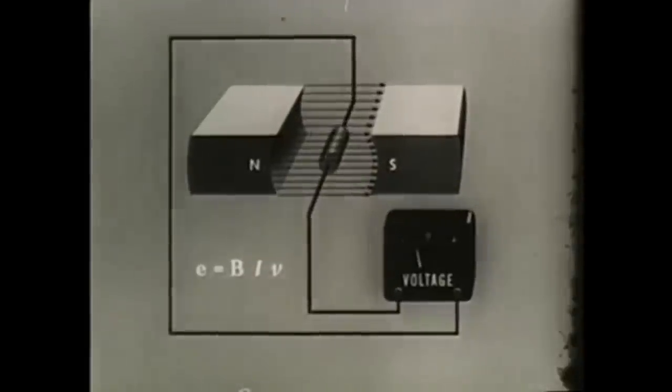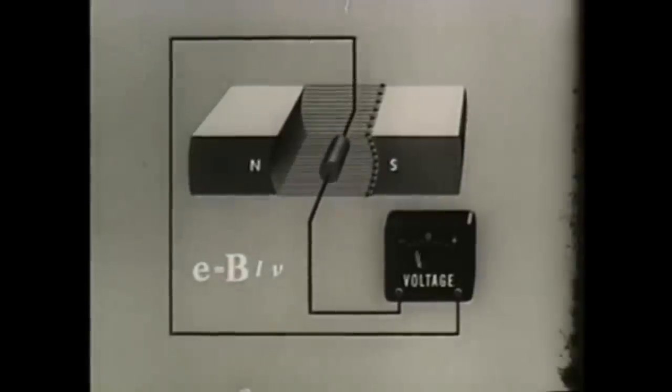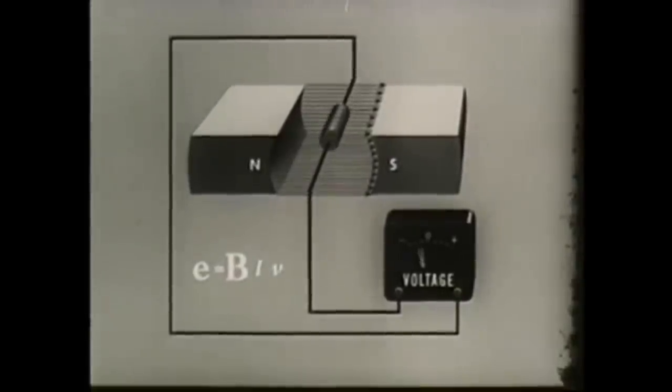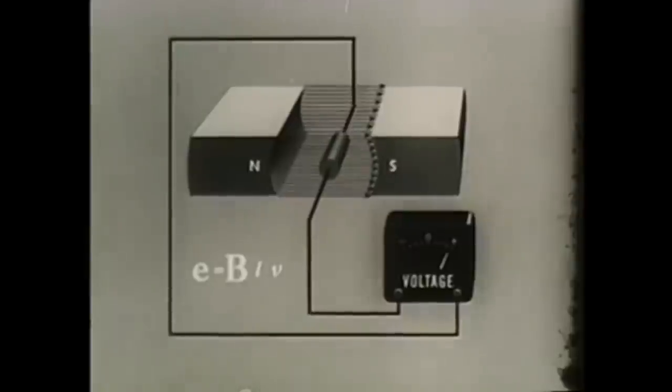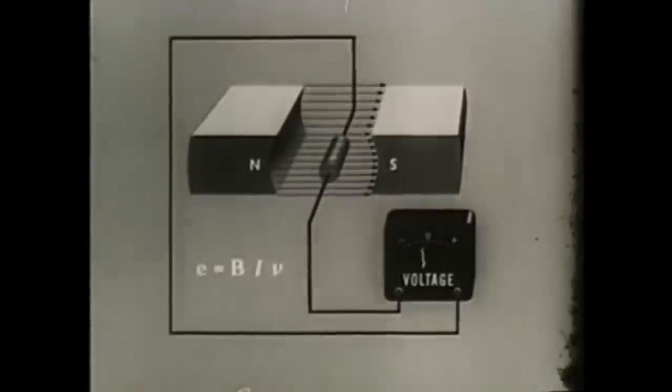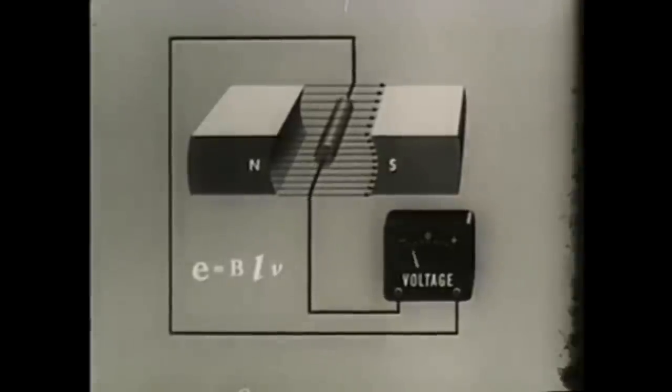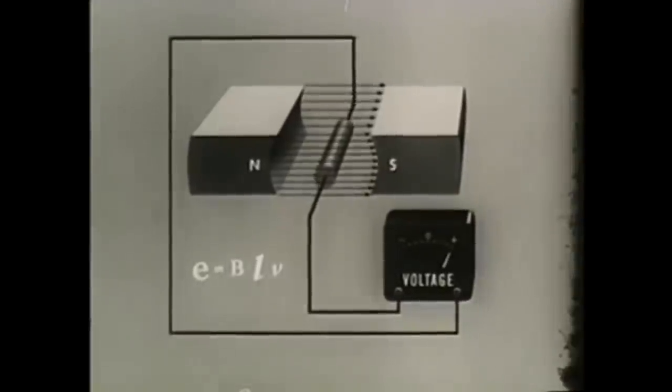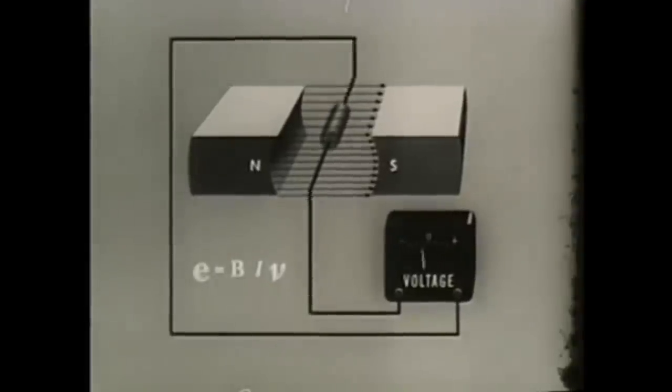An increase in the number of lines of force or the strength of the field increases the instantaneous EMF in the conductor. Increases in the length of the conductor cutting lines also increases the EMF. And finally, the greater the velocity of the conductor, the greater the EMF.